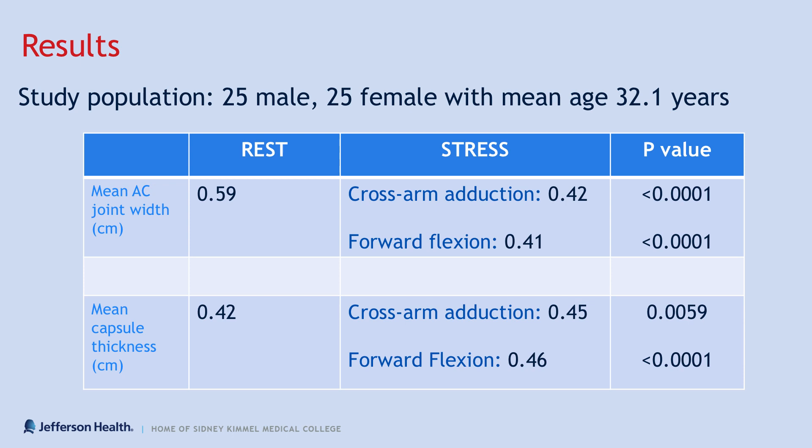Our results were as follows. We had a population with 25 male and 25 female subjects, with an average age of 32.3. The average joint width for the AC joint at rest was 0.59 centimeters. With both stress maneuvers, this number decreased significantly. The mean capsule thickness at rest was 0.42 centimeters, and this slightly increased with both maneuvers as well.